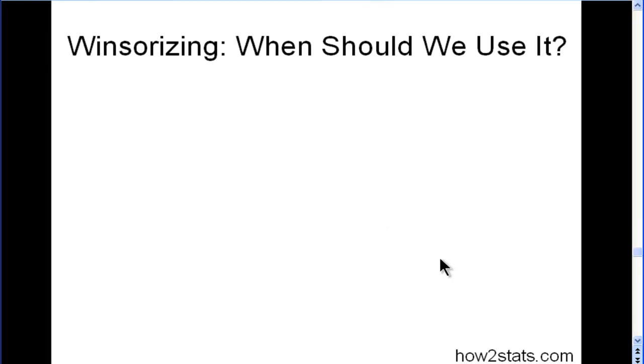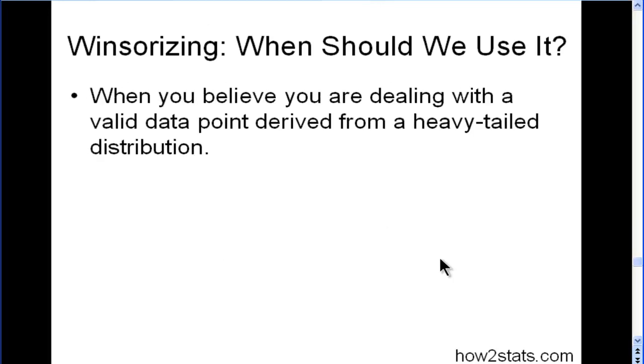Now, Winsorizing—when should you use it? When you believe the data you're dealing with are valid points derived from a heavy-tailed distribution. When you're only dealing with a couple of observations, it doesn't really change the distribution very substantially.